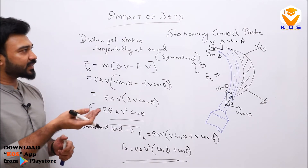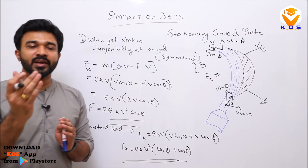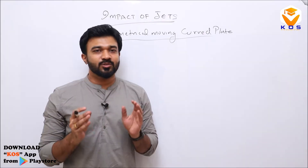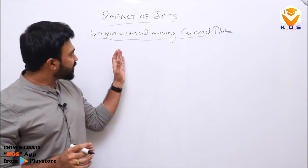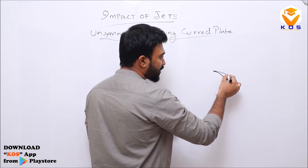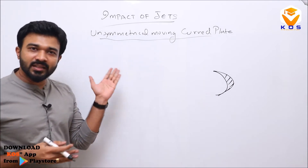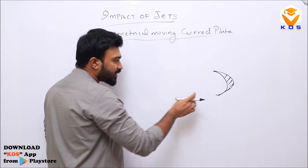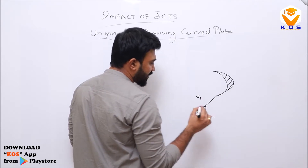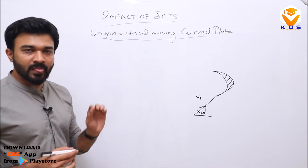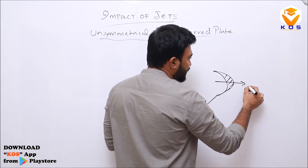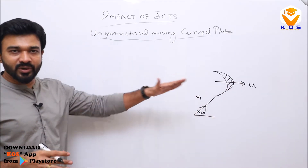We also have a moving blade with tangential entry. The last and very important case in single plate analysis is the unsymmetrically moving curved blade — a curved blade that is unsymmetrical, with inlet angle θ and exit angle φ. Here we have an inlet velocity V1 at nozzle angle alpha.